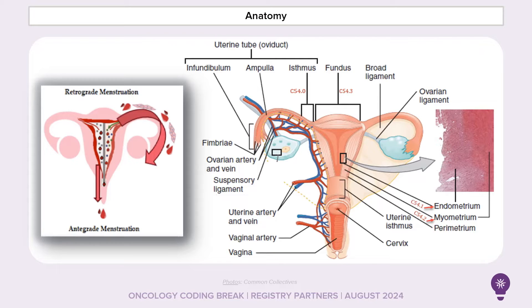Menstrual flow is supposed to be antegrade, leaving through the vagina, but sometimes it's retrograde. It can go backwards and come out through the opening between the fallopian tubes and the ovaries. That tissue can then land on the ovaries, on the uterus, or also on the bladder and other organs. This is what is thought to happen with endometriosis.